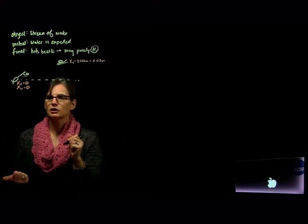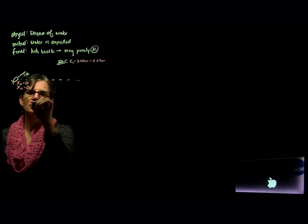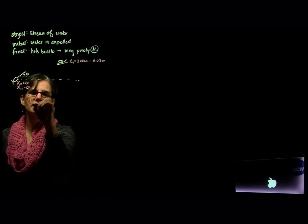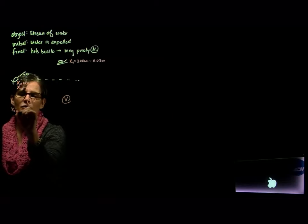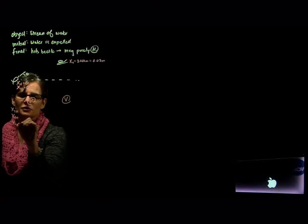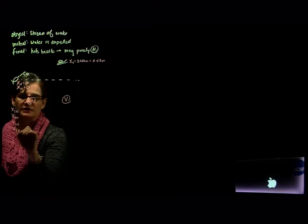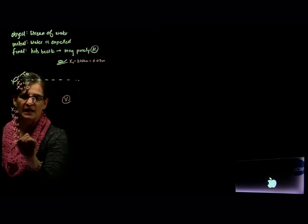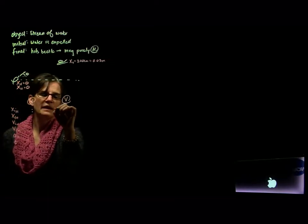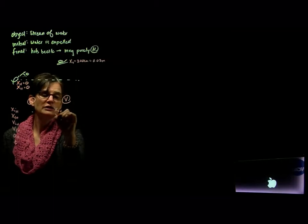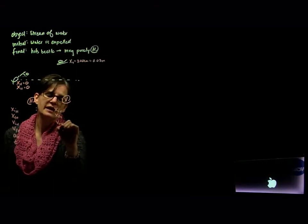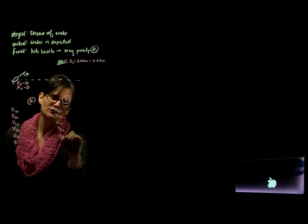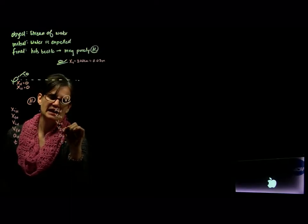Let's look at the horizontal and vertical motions. For horizontal, we have: x initial, x final, v initial, v final, acceleration, and time. And for vertical, we have: x initial, x final, v initial vertical, v final vertical, acceleration vertical, and time.